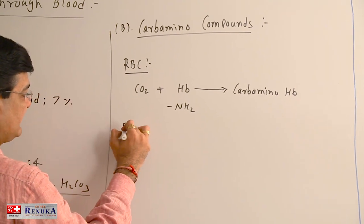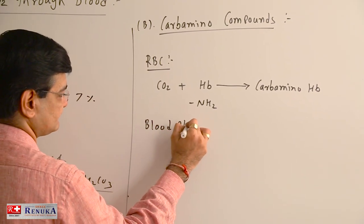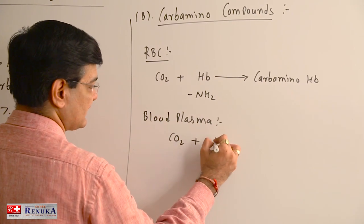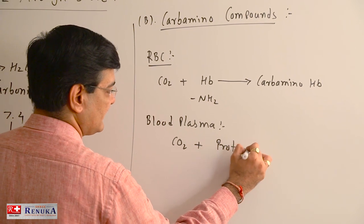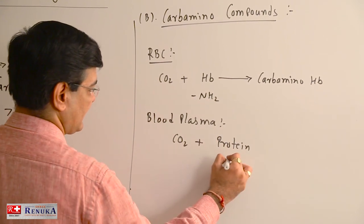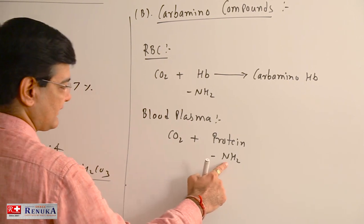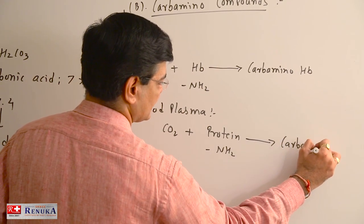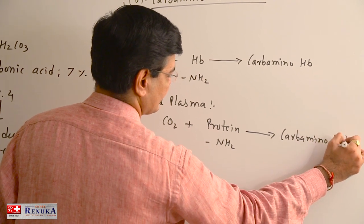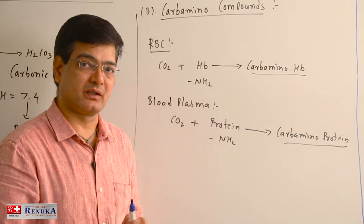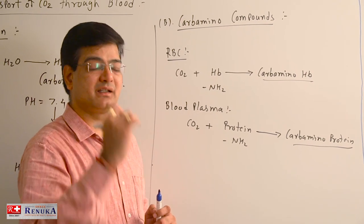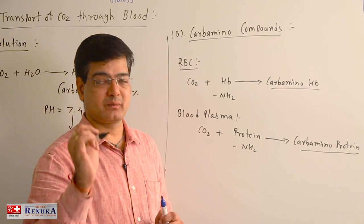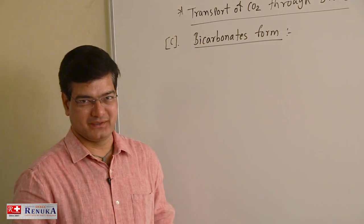Along with that, in the blood plasma, a certain amount of carbon dioxide reacts with the proteins present in the blood plasma, which also have NH2 radicals. Carbon dioxide reacts with the NH2 of the plasma protein to form carbaminoprotein. In this form, carbon dioxide is transported towards the respiratory surface — nearly 23% (some references give a range of 20 to 25%).